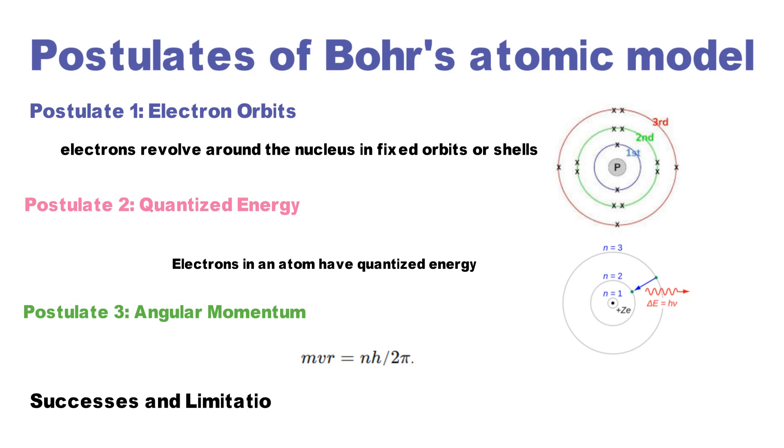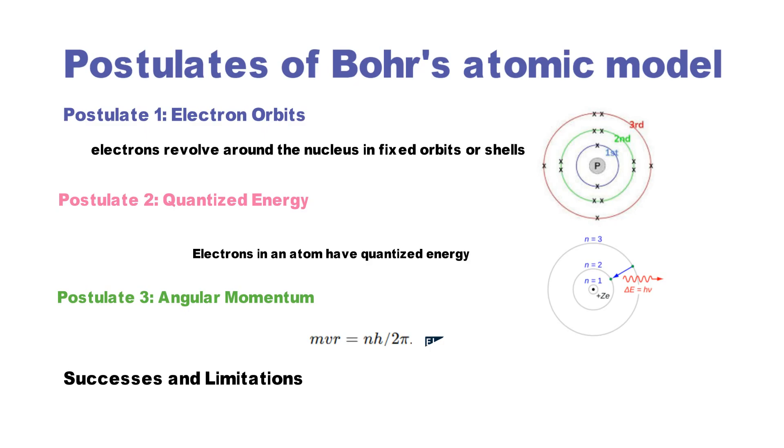Bohr's model explained the spectral lines of hydrogen perfectly, but it couldn't handle more complex atoms. Still, it was a pivotal step in the development of quantum mechanics.